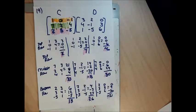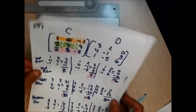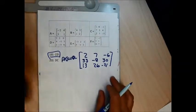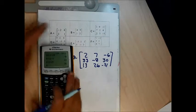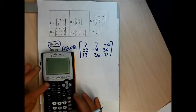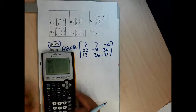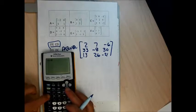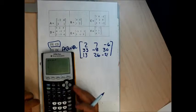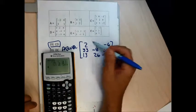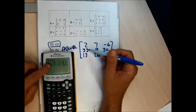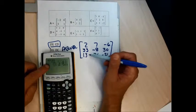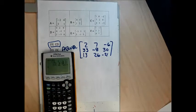Let me check on my calculator — I'm a bit worried, but it has to be done. Second matrix, go down to C and hit enter. Then second matrix, go down to D and hit enter. I see 2, 7, negative 6; 33, negative 8, 30; 13, 26, negative 21. Shocking that it's actually correct!